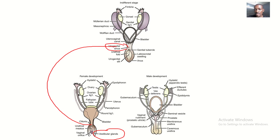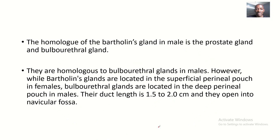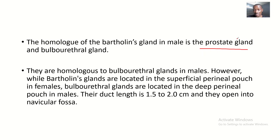In females, the urogenital sinus develops as the vestibular glands, while in males the urogenital sinus develops as the bulbourethral gland. So the homologue of Bartholin's gland in males is the prostate gland and the bulbourethral gland.